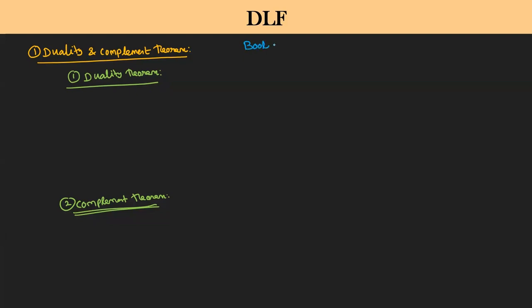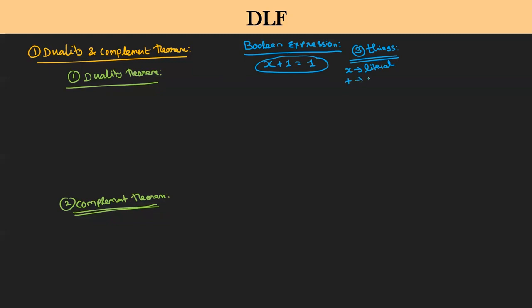The hero of both concepts is a boolean expression. For example, x plus 1 equal to 1 — this is one boolean expression. It contains three things: x is called a literal, plus is an operator, and 1 is the boolean value. The opposite of x is x-bar, the opposite of plus is dot, and the opposite of 1 is zero.